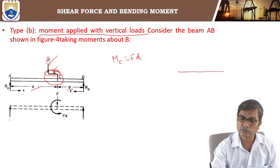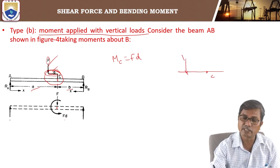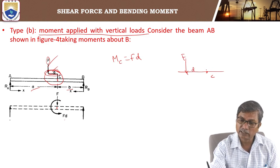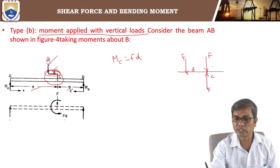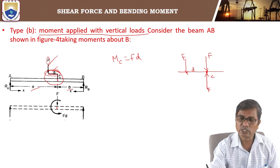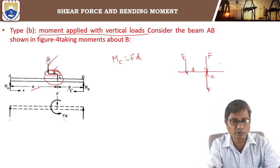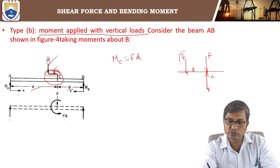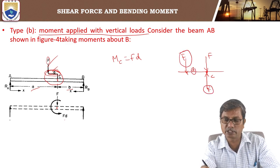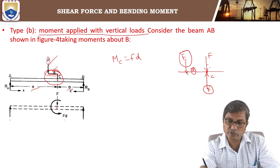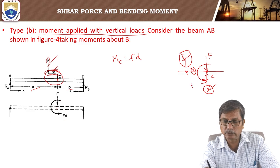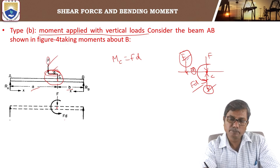Couple means two equal and opposite forces. If you consider point C with force F acting at distance d, you can apply two equal and opposite loads F at C without affecting the beam. The upward force at C and the downward force at C-plus-d, being equal and opposite, constitute a couple. They can be replaced by a couple Fd.